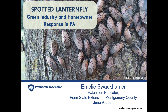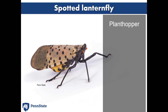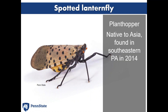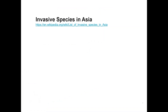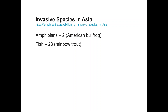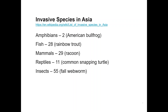The Spotted Lanternfly is a plant hopper, native to Asia. It was first found in southeastern Pennsylvania in 2014. It has now spread to six states and been detected in four additional states. It's worth remembering that invasive species go both ways across the world — we have many invasive species here from Asia, but Asia is also dealing with invasive species from North America.